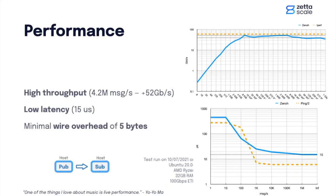Zeno has incredible performance. It delivers over 4 million messages per second, and on modern networks it delivers up to 52 gigabits per second. It has a latency of 15 microseconds. In short, it is very fast.